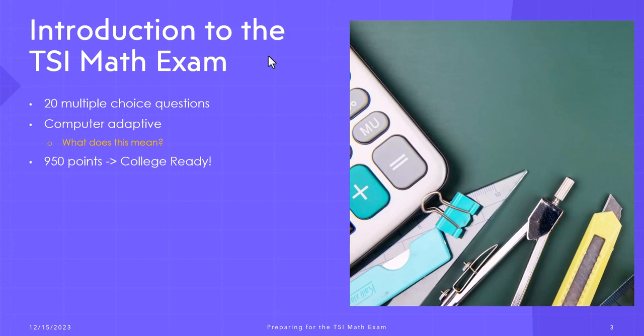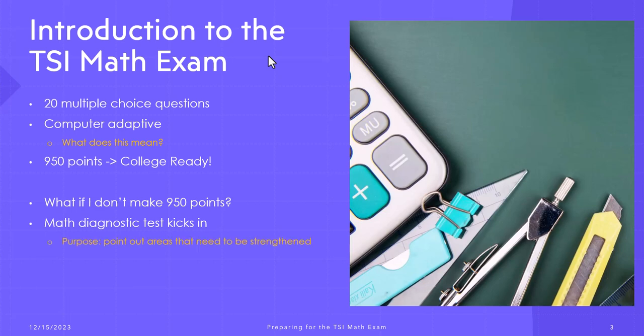If you score 950 points, you are college ready and the exam ends. If you don't score 950 points, the math diagnostic phase kicks in to determine which areas you need to strengthen before you are college ready.